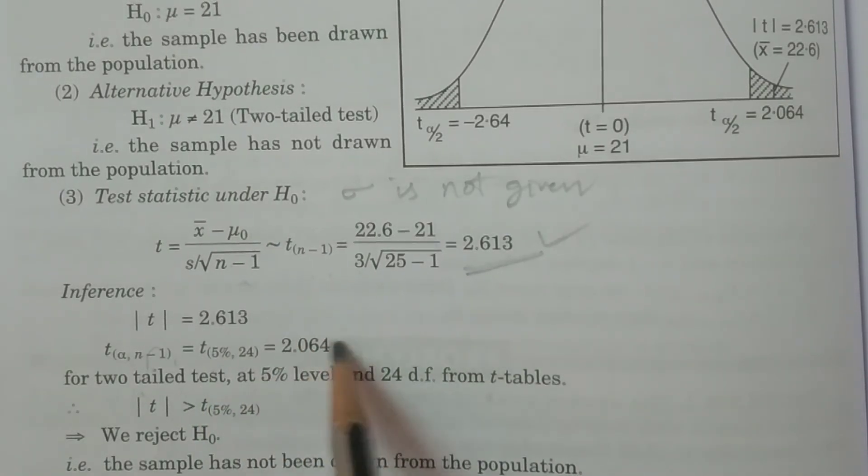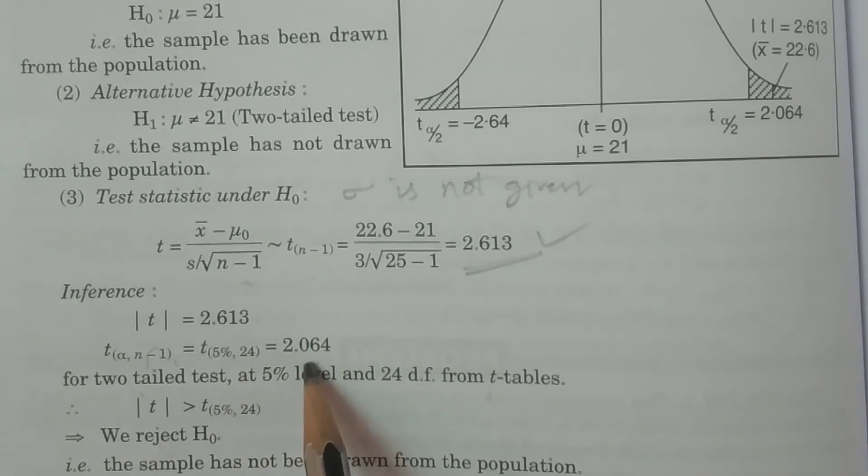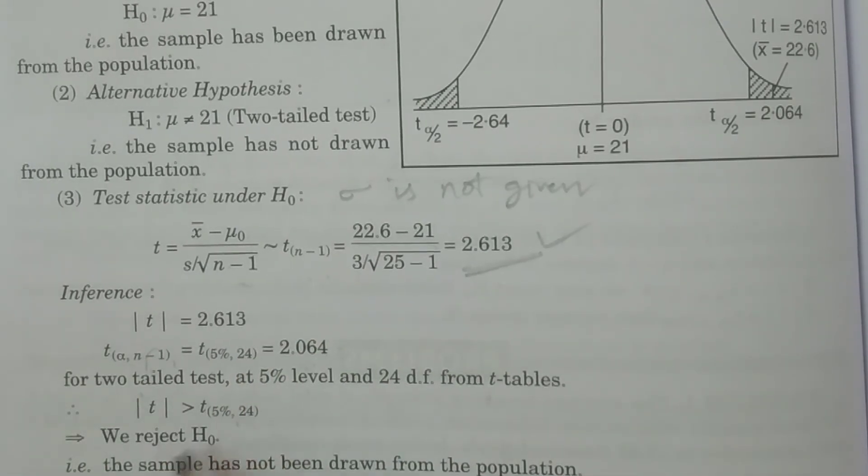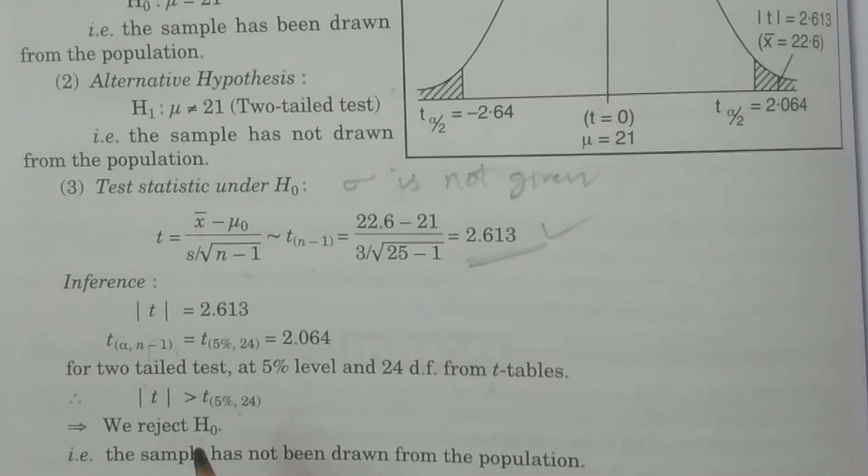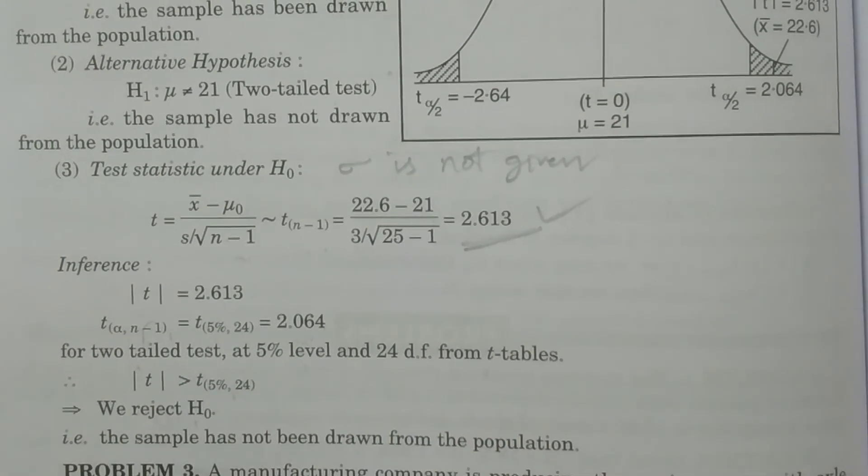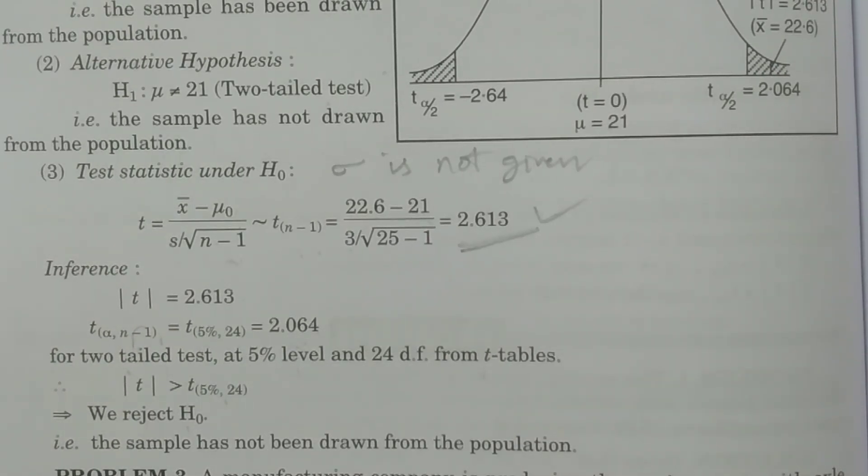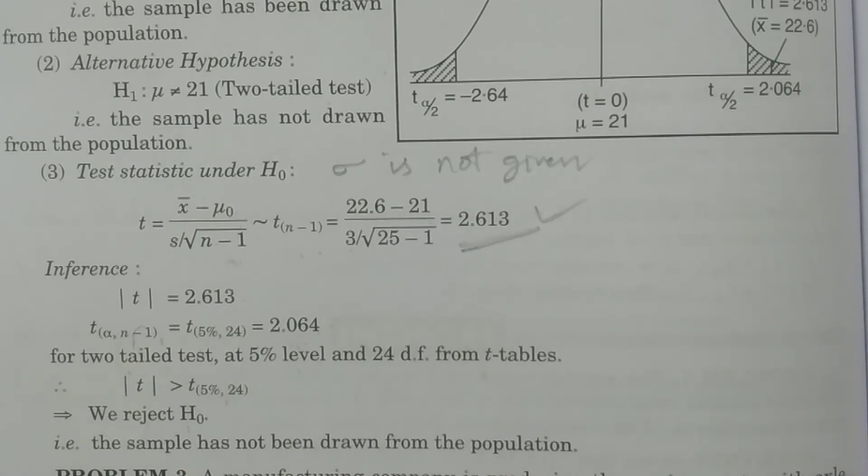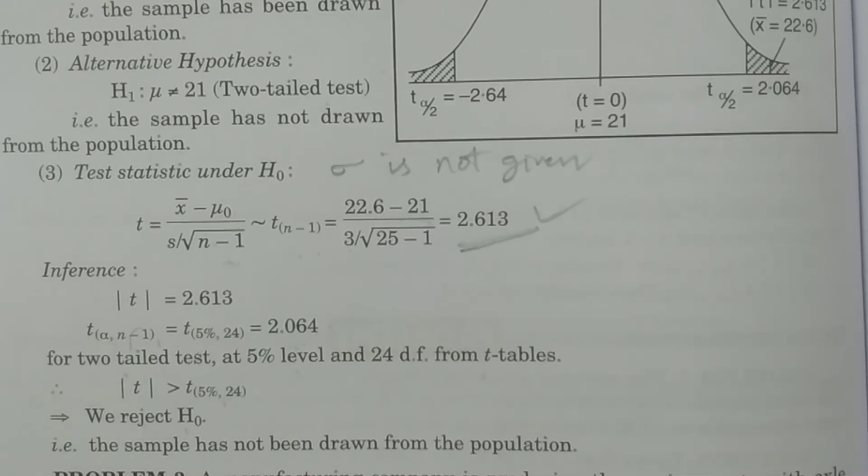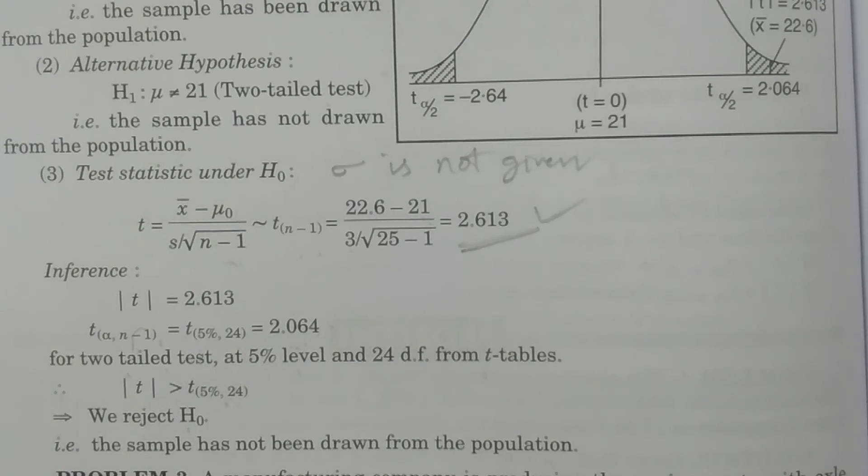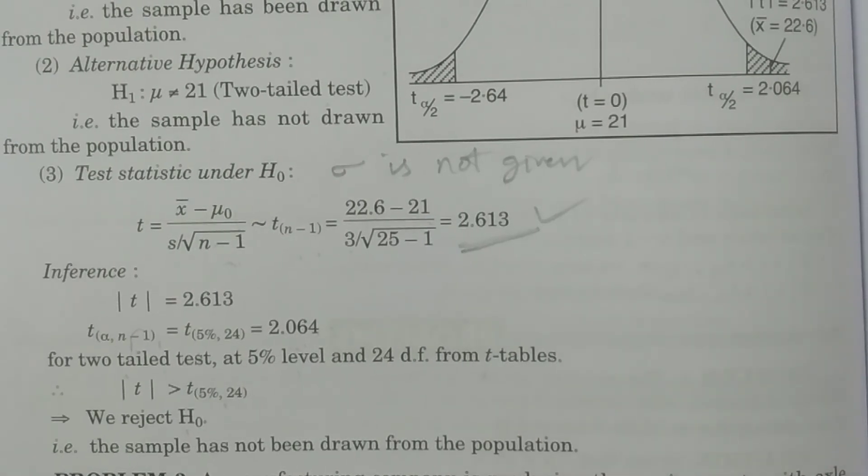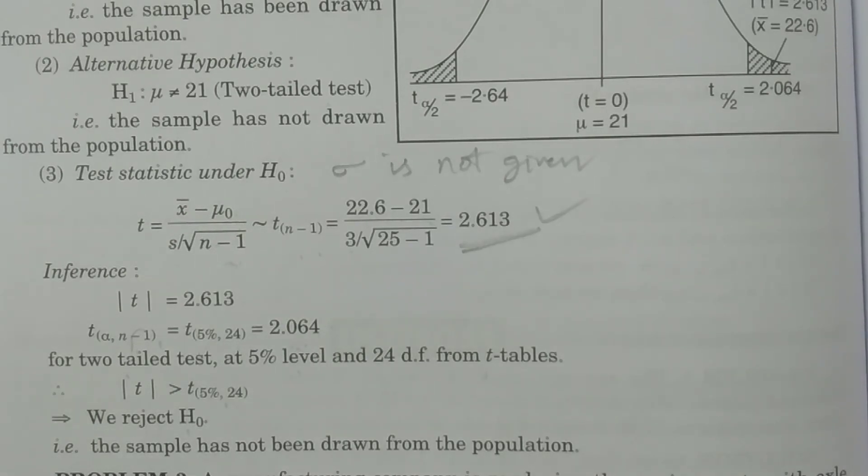So, if we run it in comparison, 2.613 is greater than 2.064. Therefore, H0 is rejected. H0 is rejected means the sample has not been drawn from the population. The sample has not been drawn from the population.